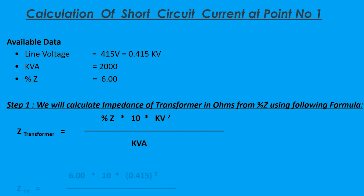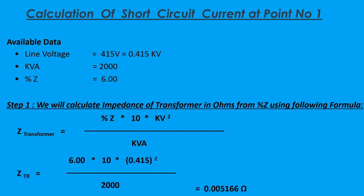Therefore, Z transformer equals 6 times 10 times 0.415 squared, divided by 2000, which comes to 0.005166 ohms.